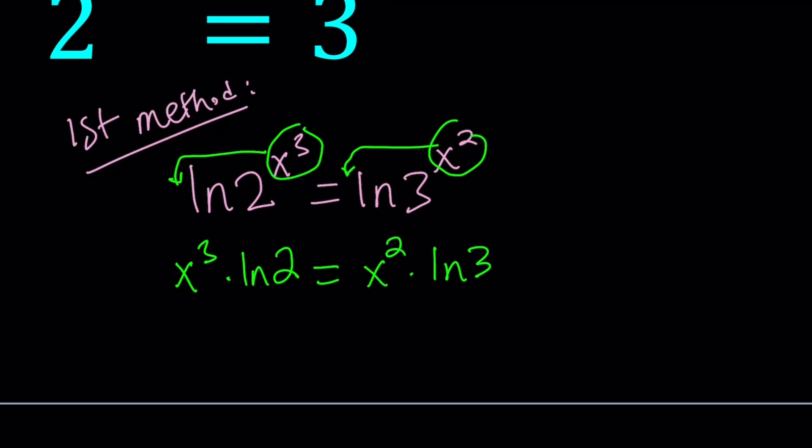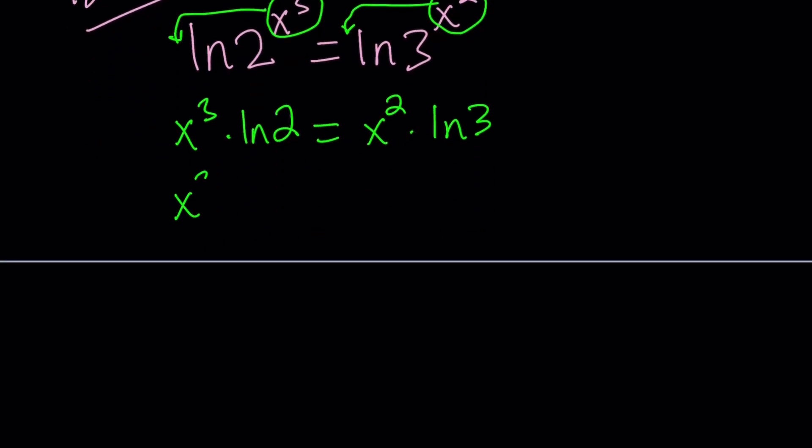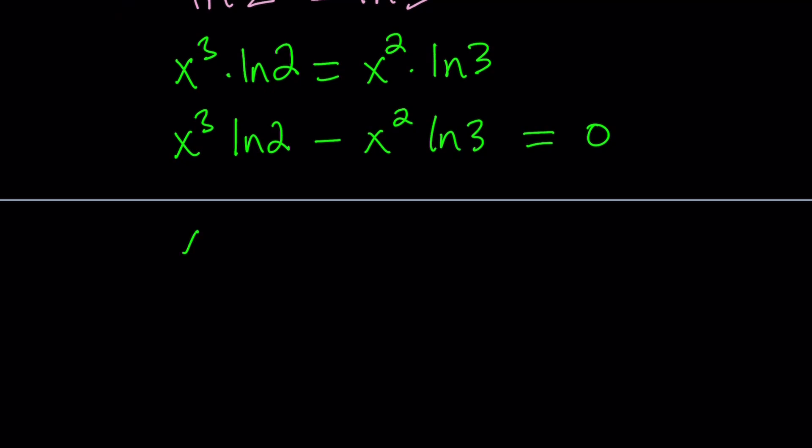By the way, ln is the natural logarithm, which is base e. Now, let's go ahead and put everything on the same side. x cubed times ln 2 minus x squared times ln 3 equals 0. We can factor out x squared since it's a common factor, giving us x squared times the quantity x ln 2 minus ln 3 equals 0.